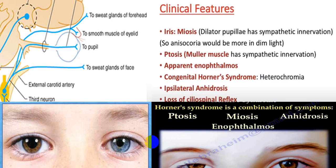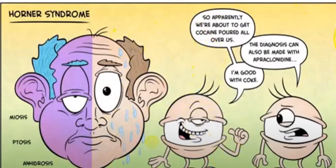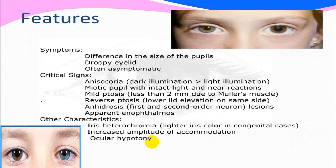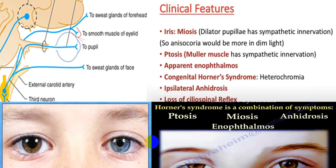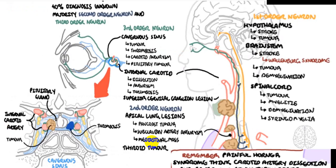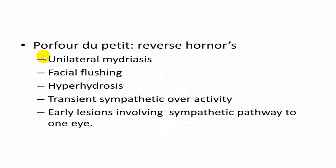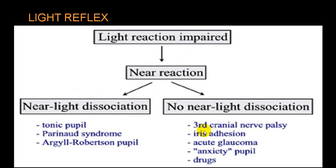The full picture of Horner's syndrome has been uploaded separately. There is also a reverse Horner's syndrome (also called Pourfour du Petit syndrome): unilateral mydriasis, facial flushing, hyperhidrosis — opposite findings to Horner's syndrome because of transient sympathetic system over-activity.